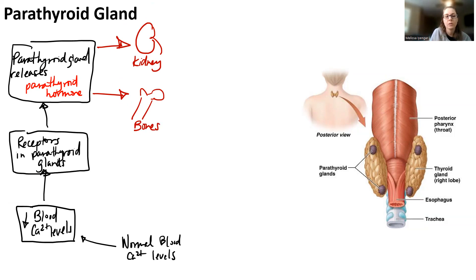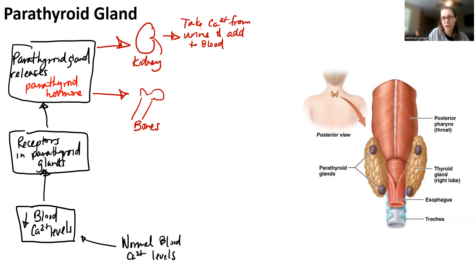Parathyroid hormone targets the kidneys, and when it does, it tells the kidney to reabsorb calcium — taking calcium that would have been released in urine and putting it back into blood. The kidney is also secondarily going to activate vitamin D, and vitamin D is actually going to go towards the small intestine.